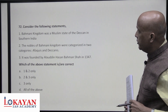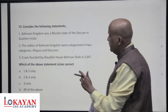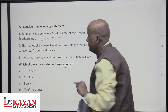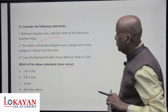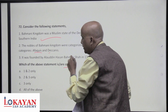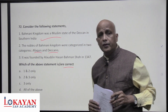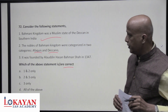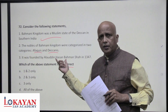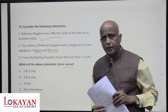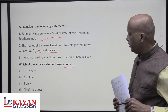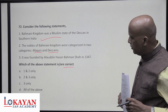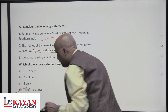Consider the following statements. Bahamani kingdom was a Muslim state in the Deccan in southern India — correct. The nobles of the Bahamani kingdom were categorized into two categories: Afaqis (foreign nobles from Iran) and Dakhanis (converted Indians seeking jobs in the court) — correct. It was founded by Alauddin Hasan Bahmanshah in 1347 — correct. All three statements are correct — answer is D.